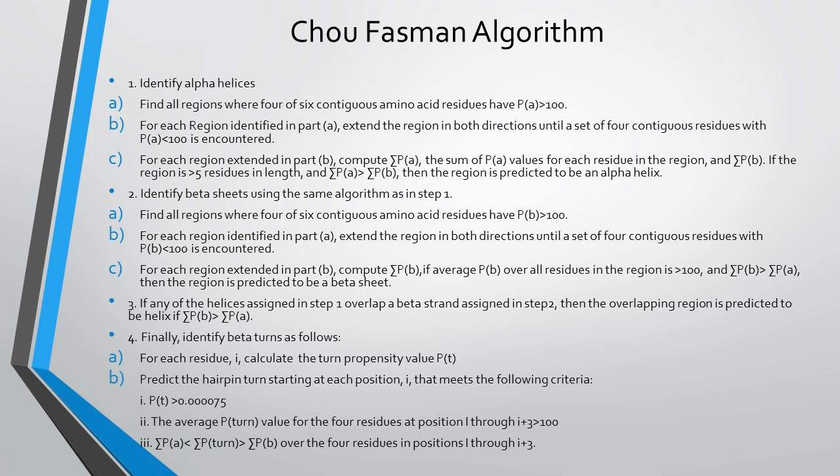Step two is the identification of beta sheets using a similar algorithm. Here, instead of Pa, we consider Pb, since Pb indicates beta sheets. In step 2a, find all regions where four to six contiguous amino acid residues have Pb greater than 100. In step 2b, for each region identified, extend the region in both directions until a set of four contiguous residues with Pb less than 100 is encountered. In step 2c, for each extended region, compute sigma Pb. If the average Pb over all residues in the region is greater than 100 and sigma Pb is greater than sigma Pa, then the region is predicted to be a beta sheet.